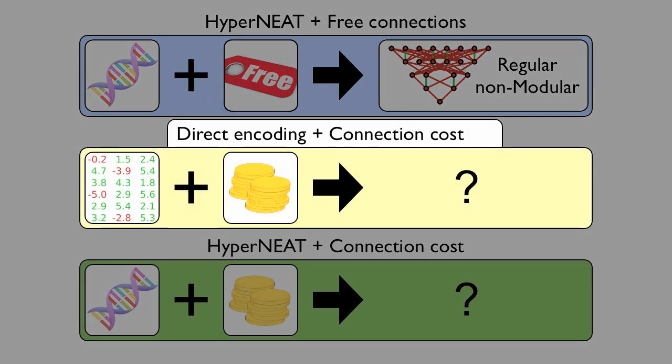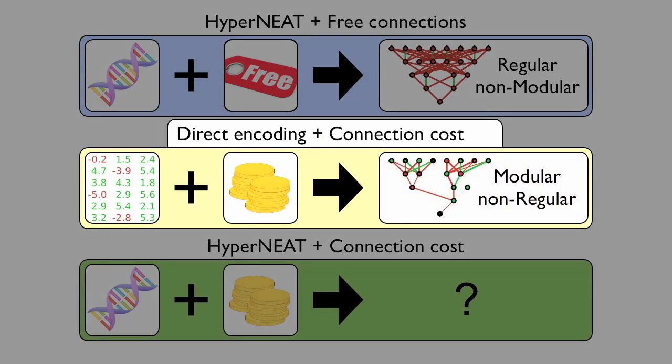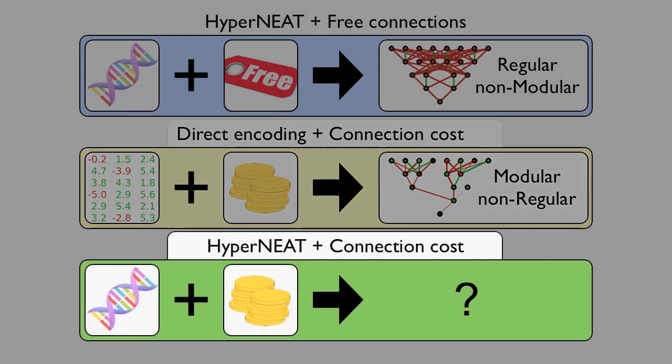Second, we tested the direct encoding with the connection cost on our problem. Again, the results were not surprising. Resulting networks were modular, but non-regular.